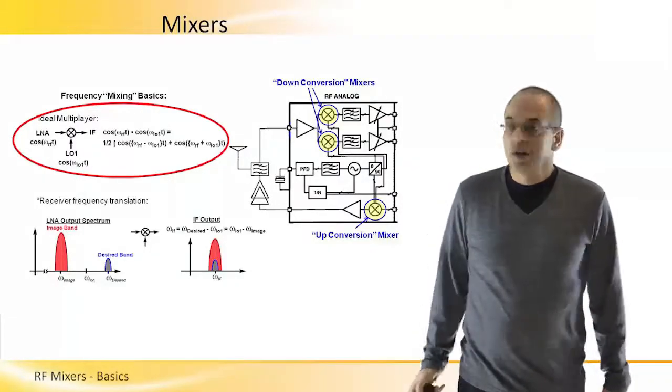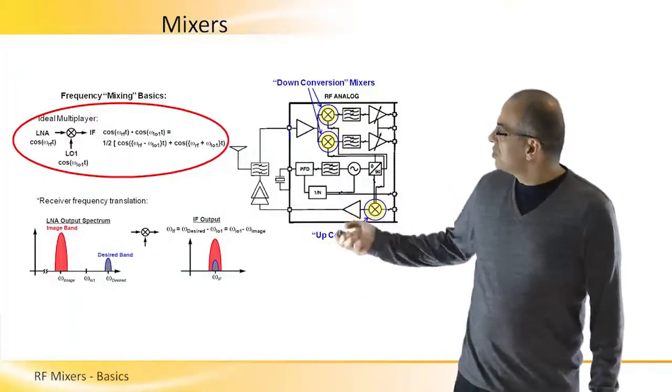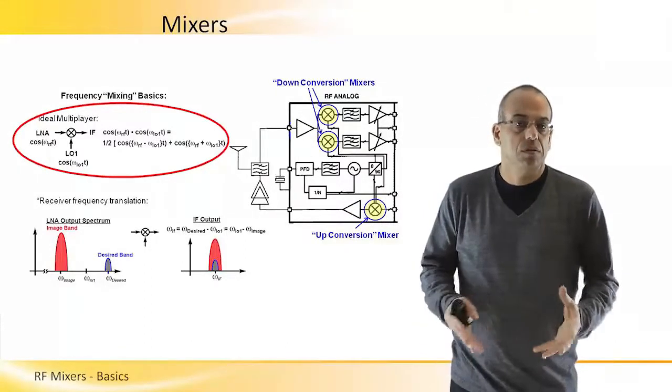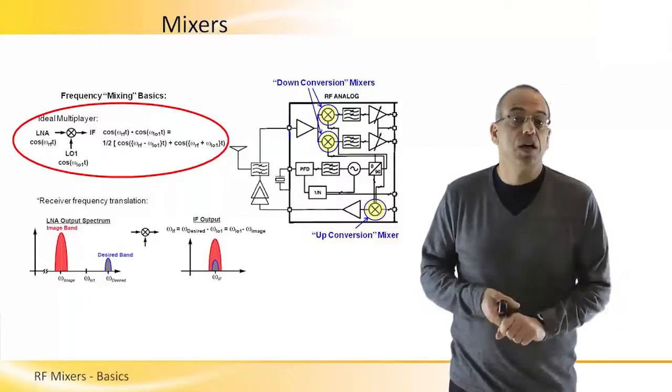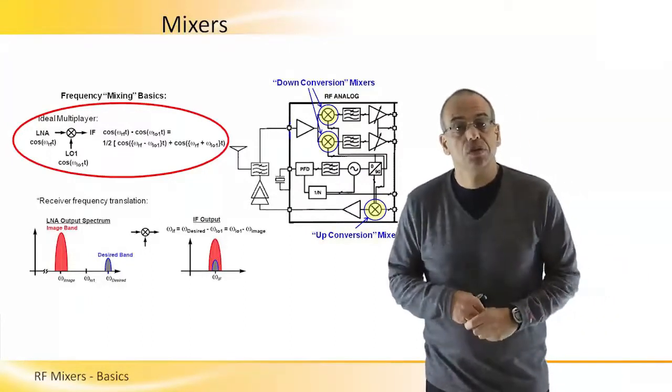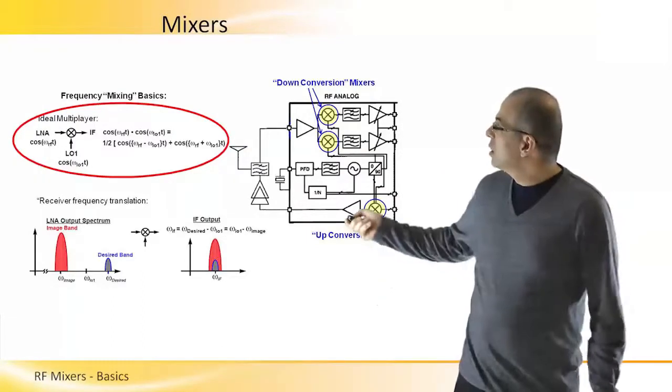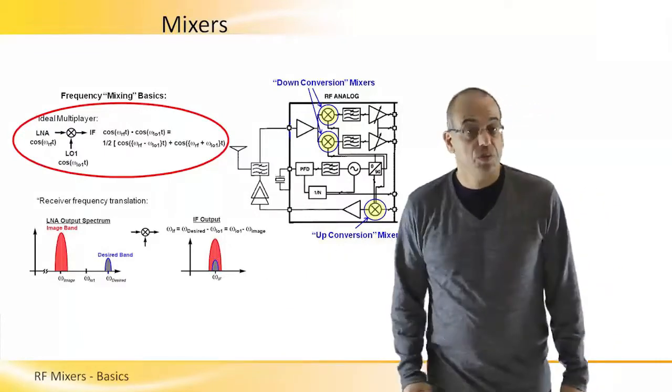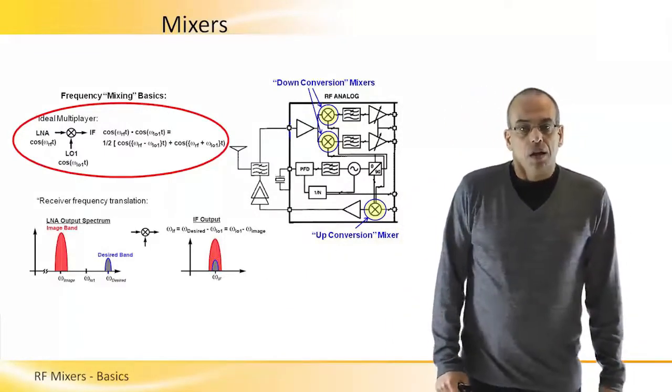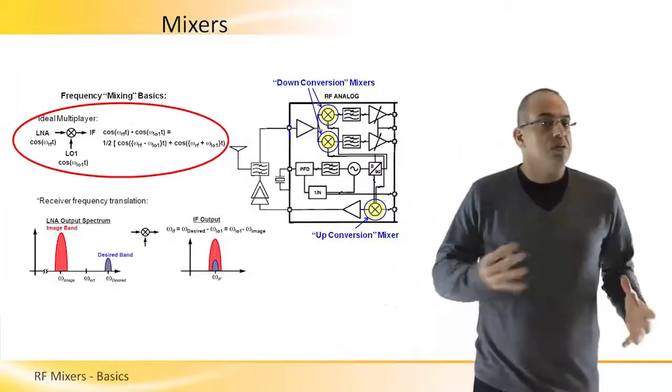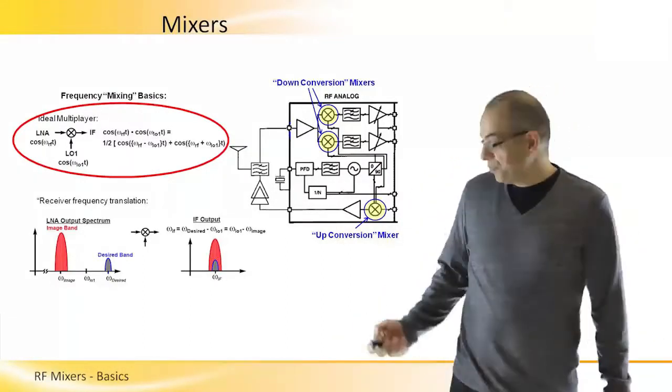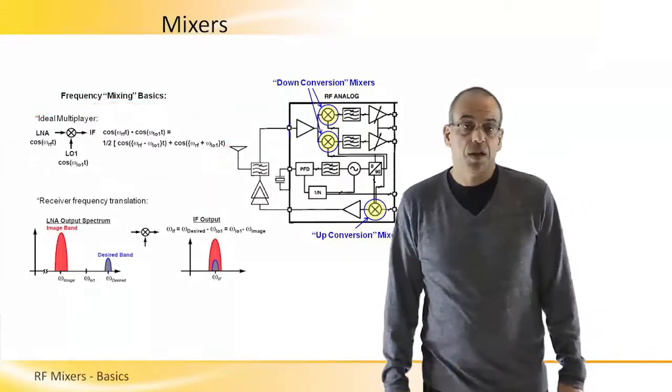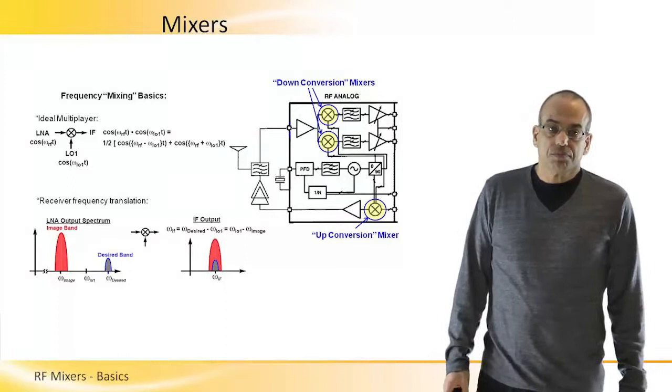So if the RF and LO frequencies are such that they're close enough, we will be able to convert the signal with this part of the expression to a lower frequency. This would be a down converter. We can certainly do an up converter with the other part of the expression.